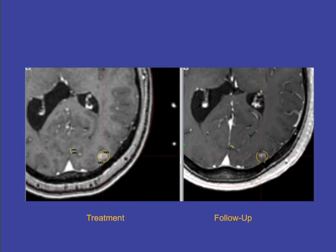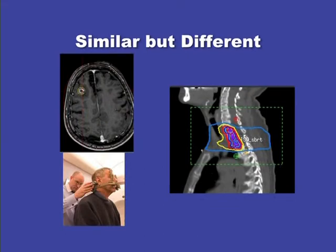We started out saying you can only treat one lesion, then it was one to three, and now there are a lot of centers showing you can treat five, six, seven, eight, nine, ten and patients can do quite well. But the analogy somewhat stops when we get to spinal stereotactic — they are quite different. You can use image guidance to do cranial stereotactic, but you are completely dependent on image guidance to do spinal stereotactic.